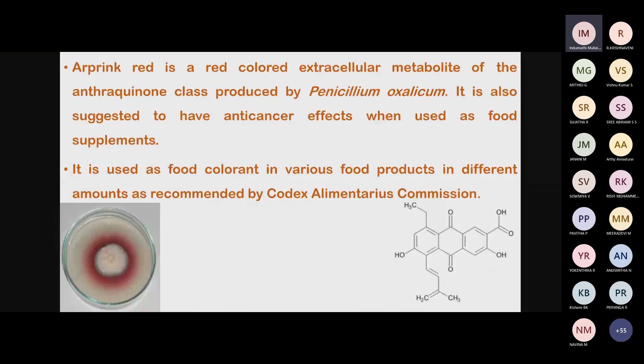Next is Arpink Red, also known as red rice — a trademark in China. This pigment is commercially and legally used as a food color. This particular fungus, Penicillium oxalicum, produces a deep red to pink-colored pigment, which is generally consumed with raw or cooked rice. It is stated to have good anti-cholesterol properties and is used as a supplement. It is recommended as a food color by Codex Alimentarius, meaning it is an approved food color isolated from this particular fungus.